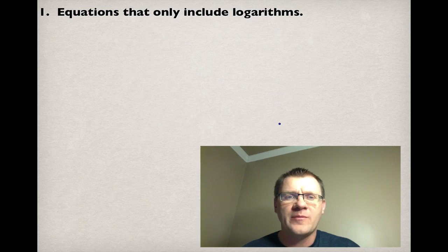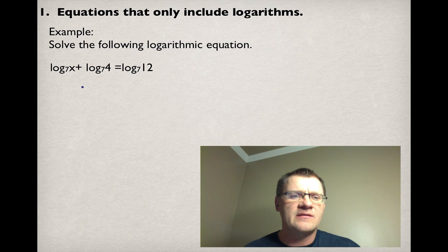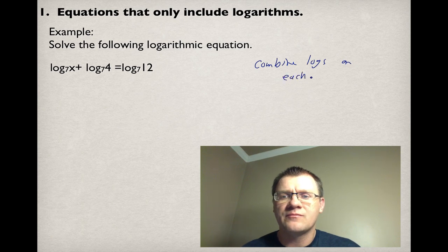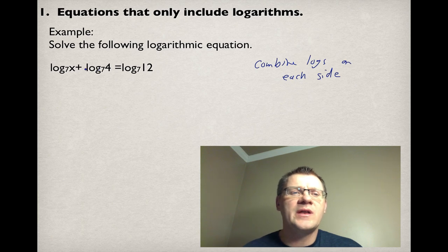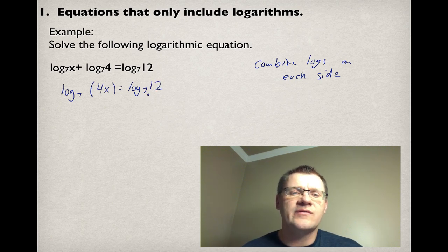Our first type of equation is equations that include only logarithms. Here is the example. The thing that you want to do here is to make sure that you combine logs on each side. We have log_7(x) plus log_7(x). Remember that if we're adding two logs together, we can change that into a single base. We would be multiplying those together.